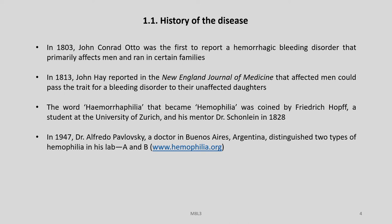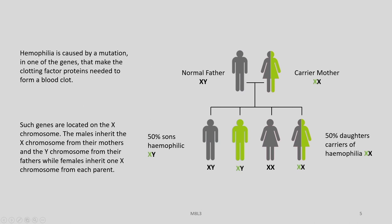In 1947, Dr. Alfredo Pavlovsky, a doctor in Buenos Aires, Argentina, distinguished two types of Haemophilia in his lab, called Haemophilia A and Haemophilia B. The website haemophilia.org contains much useful information regarding the disease.